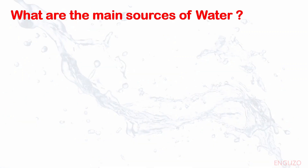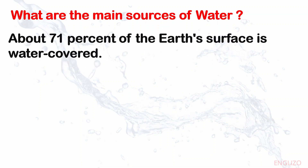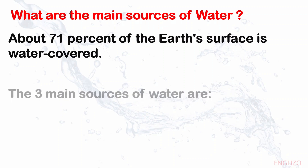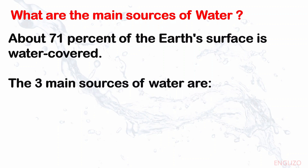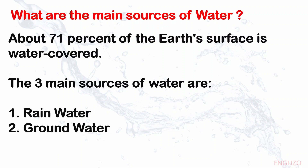What are the main sources of water? About 71% of the earth's surface is water covered. The three main sources of water are rainwater, groundwater, and surface water.